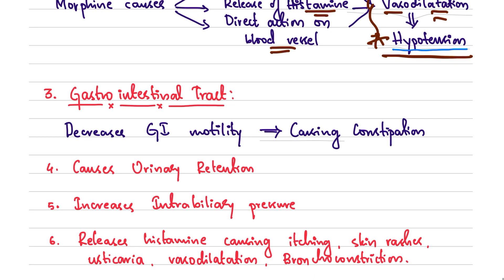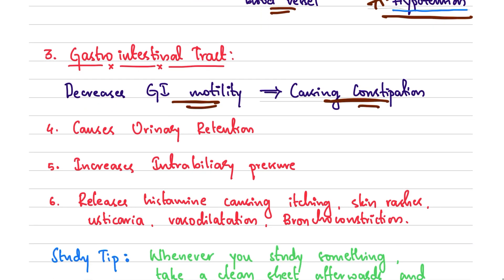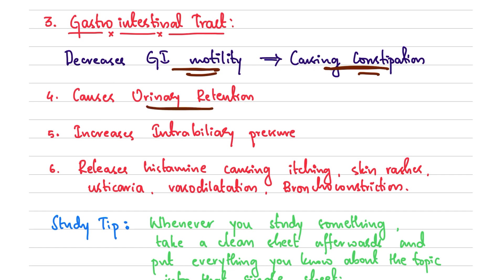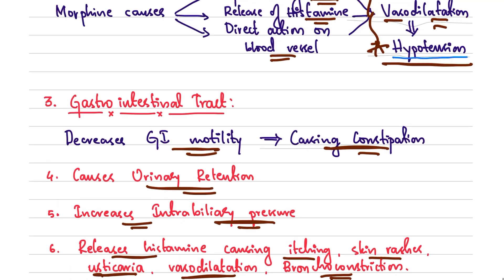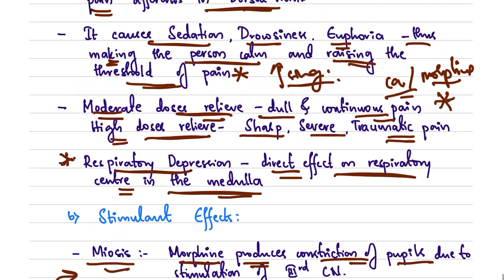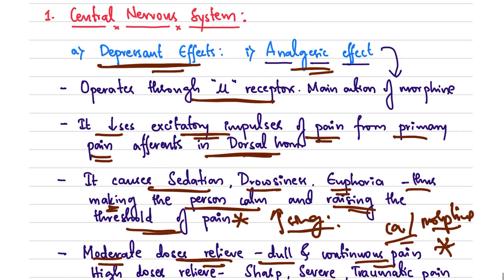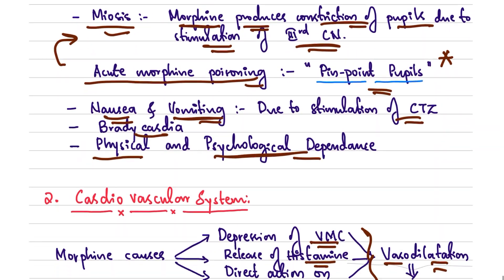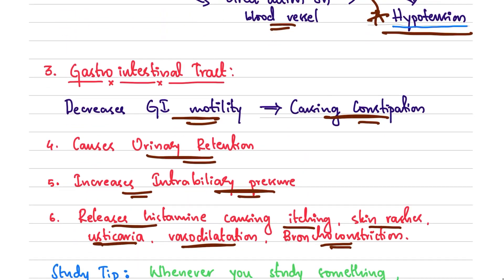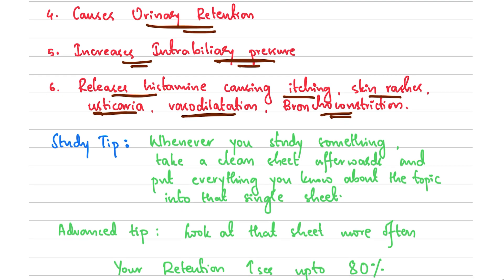For GI effects, morphine decreases GI motility causing constipation. It also causes urinary retention, increases intra-biliary pressure, and releases histamine which causes itching, skin rashes, urticaria, vasodilation, and bronchoconstriction. So morphine's effects span the CNS, CVS, GI system, and other systems.